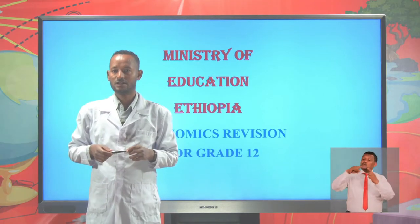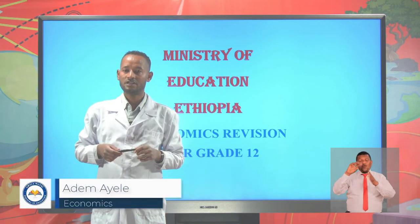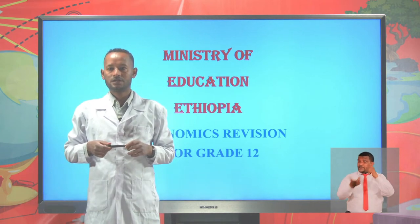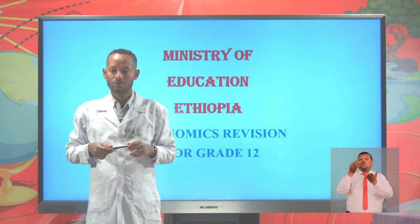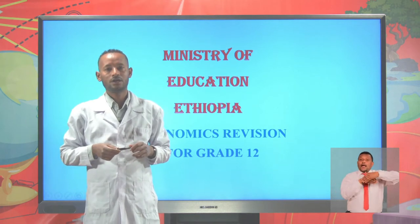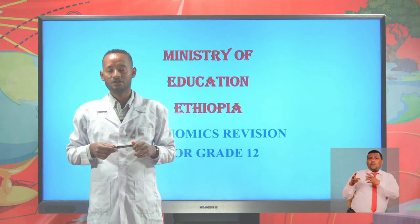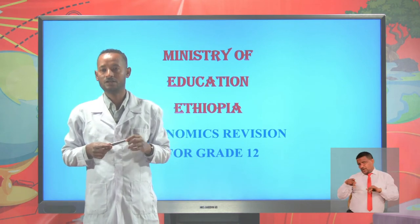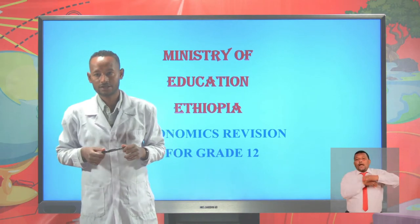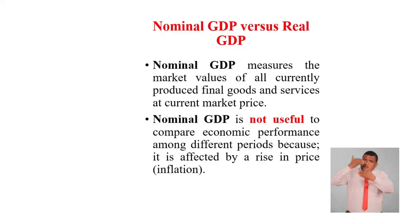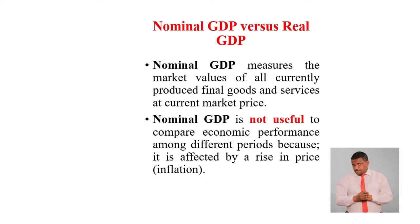Welcome to Economics Revision Lesson for grade 12 provided by the Ministry of Education of Ethiopia. Today we are going to see the second revision lesson of Unit 7, which is about the national income account. In the previous lessons we saw the approaches of measuring GDP and GNP: the product or value added approach, the income approach, and the expenditure approach. Now let's move to the second revision lesson on Unit 7, which is about nominal GDP and real GDP.